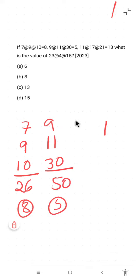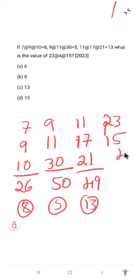11, 17, 21, the sum is 49, 4 plus 9 is 13. So the value of 23, 15 plus 4 is 42, 4 plus 2 is 6. The correct answer here is 6.